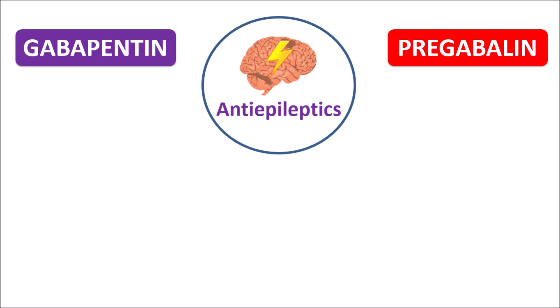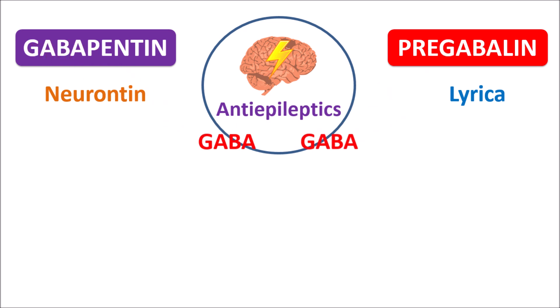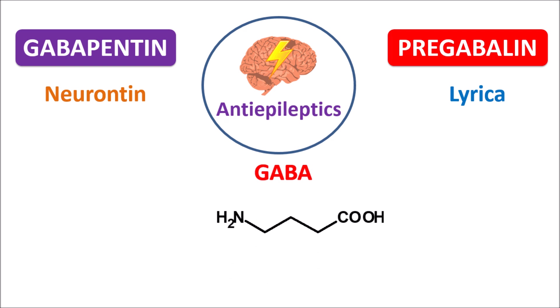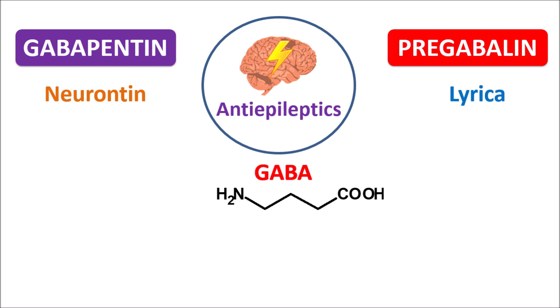Gabapentin is available under various brand names, and among them Neurontin is one of the well-known brands. Pregabalin is well familiar with its brand name Lyrica. Interestingly, we can find the term GABA in both of these drug names, so Gabapentin and Pregabalin are GABA derivatives. This is the structure of GABA, which is gamma-aminobutyric acid. Since both drugs have GABA incorporated in their structures, these drugs are called GABApentenoids.